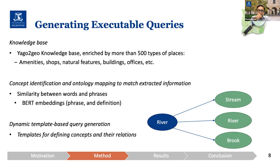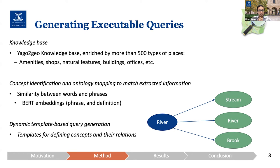Finally, generating the executable query is done by dynamic template-based query generation. This is based on defining predefined templates for each part of the GeoSPARQL query, and then concatenating and restructuring the query to form the whole GeoSPARQL query. It differs from prior work, which defined a template for the whole question type rather than generating the query based on information extracted from the question.